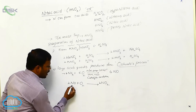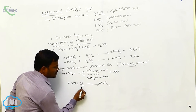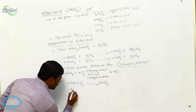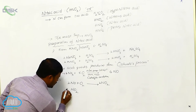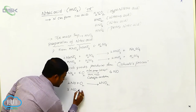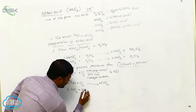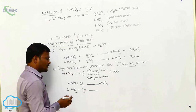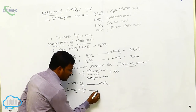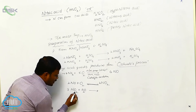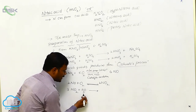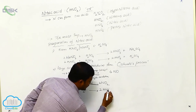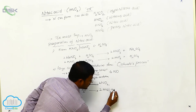In the next step, the formed nitric oxide reacts with oxygen to produce nitrogen dioxide. Then the formed nitrogen dioxide reacts with water molecules in a reversible reaction. In the last step, nitrogen dioxide undergoes hydrolysis and produces 2 moles of nitric acid (HNO₃) plus NO.